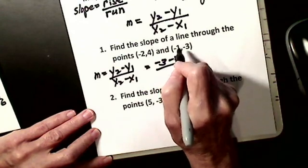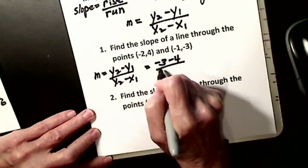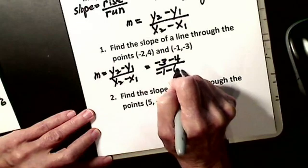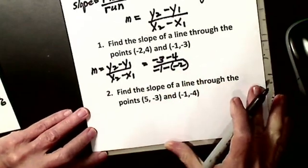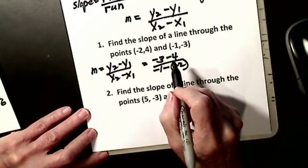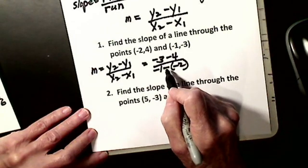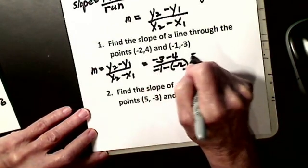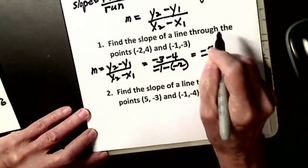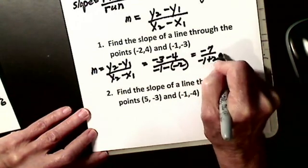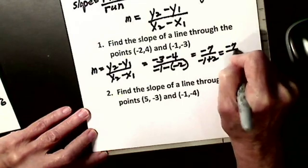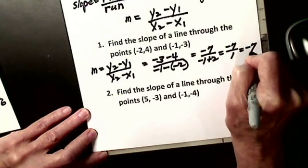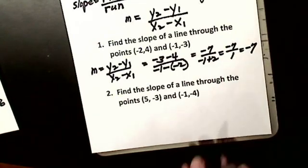I take the difference of my x's, minus one, minus minus two. Make sure you understand why it's a double negative. Because I'm taking the difference, that's this negative, the point itself is negative two. So then I get negative seven, negative one plus two. So I get negative seven over one, so the slope is negative seven.